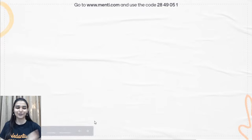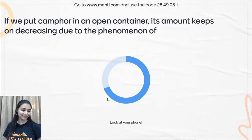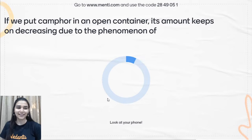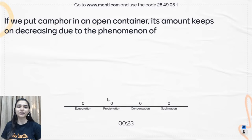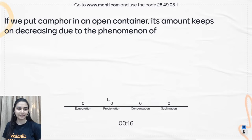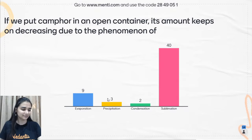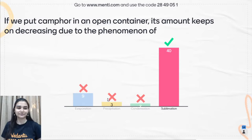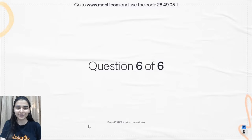Fifth question: if we put camphor in an open container, its amount keeps on decreasing due to the phenomenon of what? Options are evaporation, precipitation, condensation, or sublimation. The answer is sublimation — evaporation is liquid to vapor, but sublimation is solid to vapor directly, and camphor is a solid.